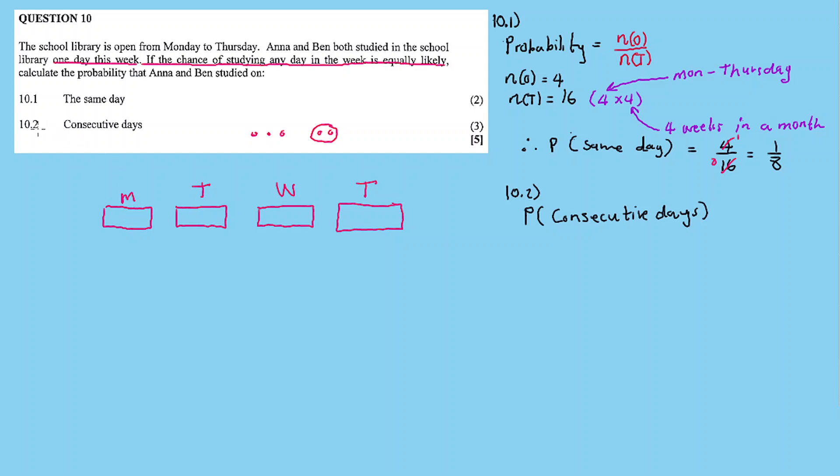So for 10.2, calculate the probability that Anna and Ben studied on consecutive days. So the assumption is that we are taking two consecutive days.